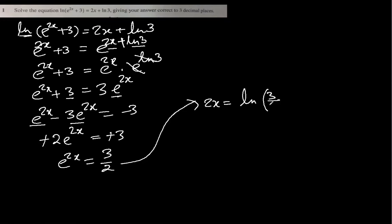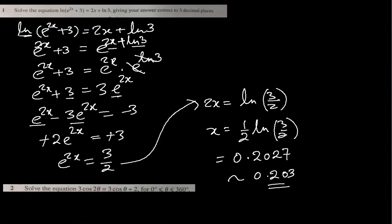This e to the power 2x becomes 3 over 2, and that gives us 2x equal to natural log 3 over 2, and x is half ln 3 over 2. They are saying to give answer in 3 decimal places. So let me evaluate this. I am getting 0.2027 which we round off to 0.203.